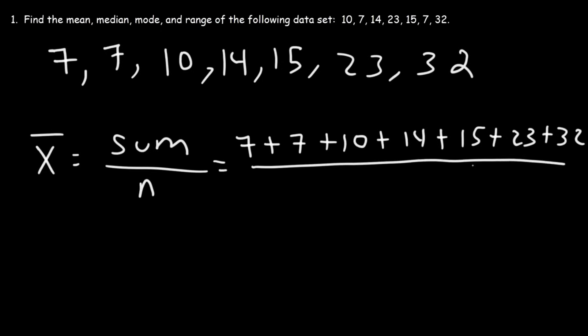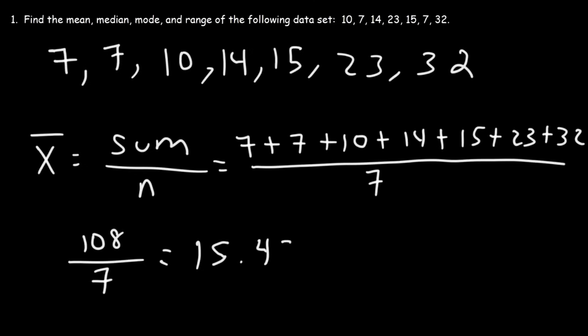...and then we're going to divide it by the seven numbers. So the mean is basically the average of those numbers. The total sum I got is 108, and if you take 108 and divide it by 7, that gives you 15.4 — I'll round it to three decimal places, so it's approximately 15.43.